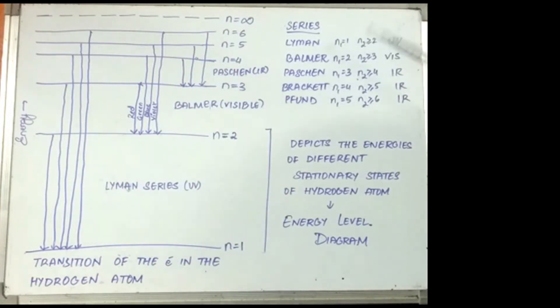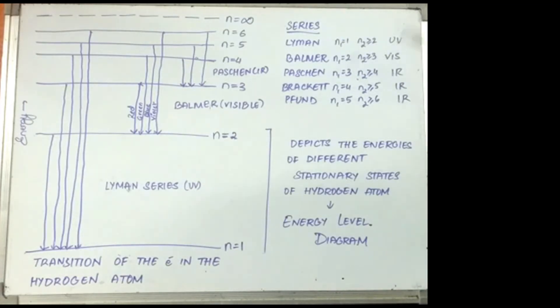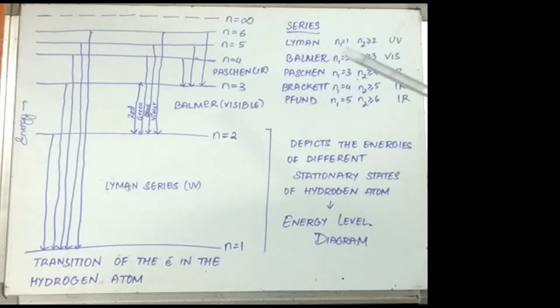Lyman series is when n1 is equal to 1 and n2 is greater than or equal to 2. This lies in the UV region. Balmer series is n1 equal to 2 and n2 greater than or equal to 3, and this lies in the visible region.